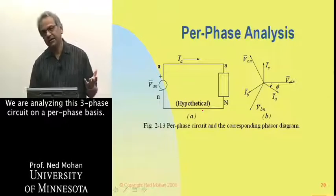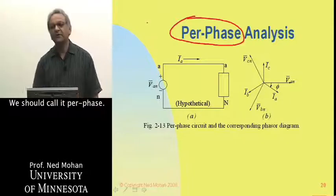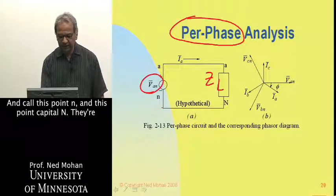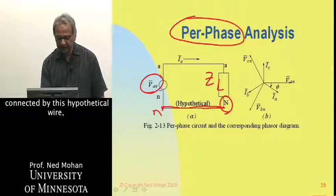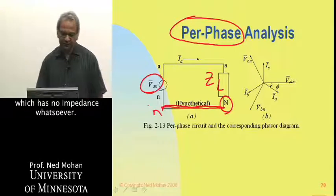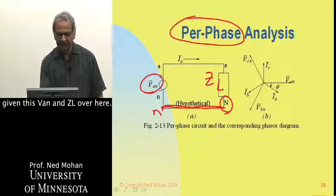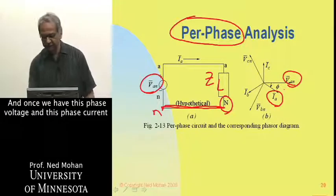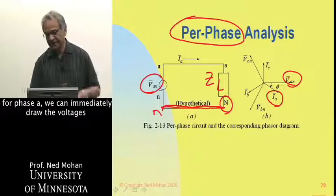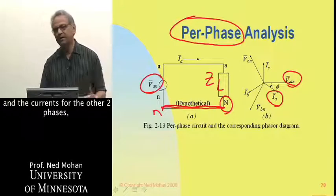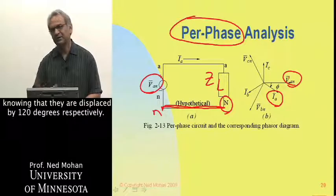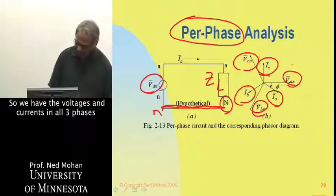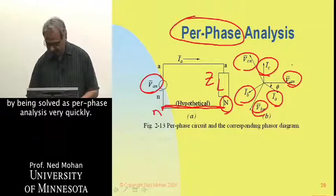We are analyzing this three-phase circuit on a per-phase basis — we should call it per-phase, not single-phase. We have voltage VAN and load ZL, with points n and N connected by a hypothetical wire with no impedance. We can very easily calculate the current given VAN and ZL. Once we have the phase voltage and phase current for phase A, we can immediately draw voltages and currents for the other two phases, knowing they are displaced by 120 degrees. So we obtain VBN, VCN, IB, and IC by means of this per-phase analysis very quickly.